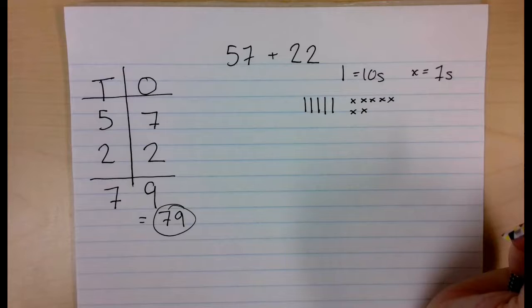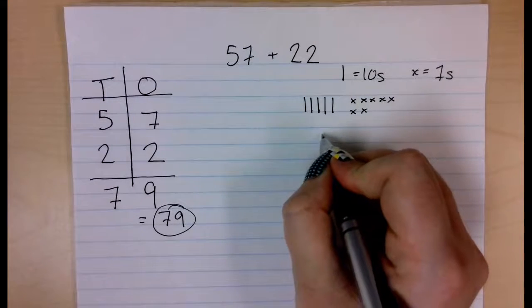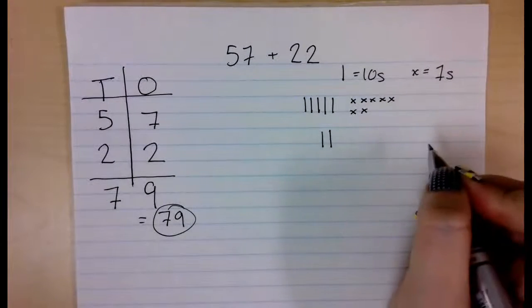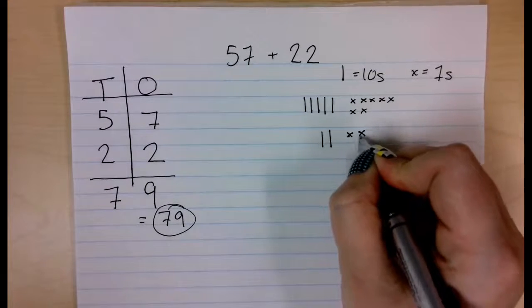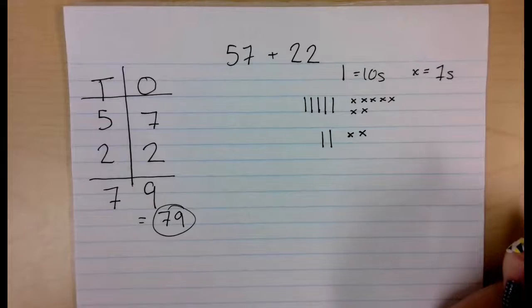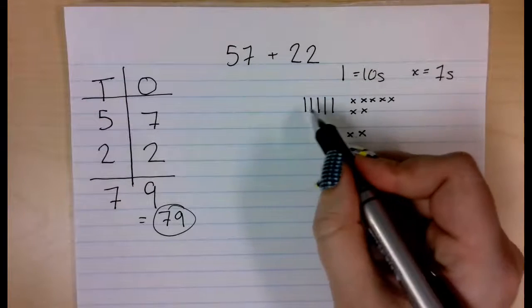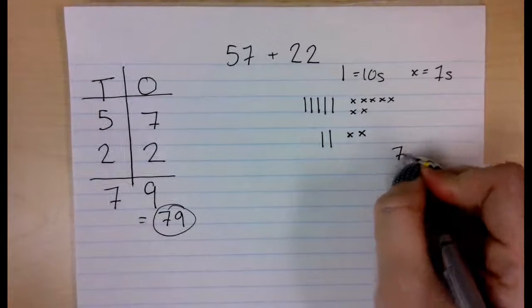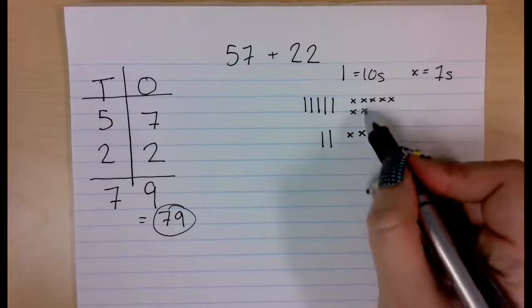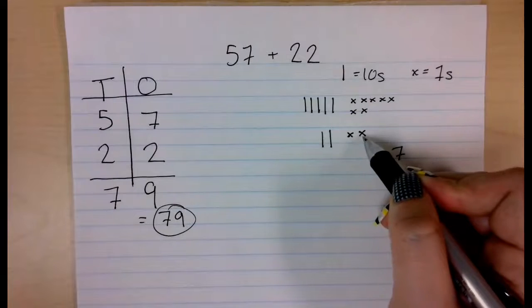And then I am going to do my 22. 2 tens, 10, 20, and 2 ones, 21, 22. I am going to count them up. So when I count this, I have 5, 6, 7 tens. And I have got 7, 8, 9 ones. 79.